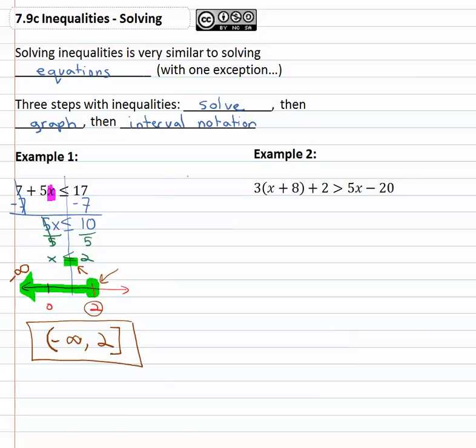Let's try one that's a little more involved. In example two, again we'll balance through the inequality symbol and start solving. We simplify the left and right side completely first, which means we need to do a little distributing. 3x + 24 + 2 > 5x - 20. We can still combine like terms, so we've got 3x + 26 > 5x - 20.